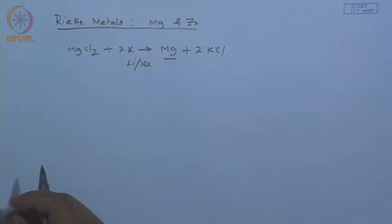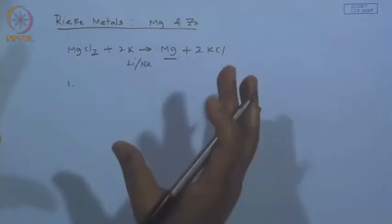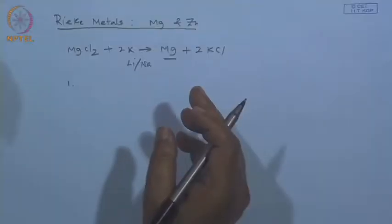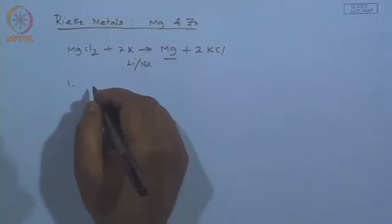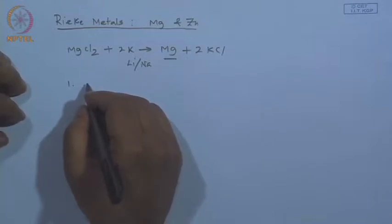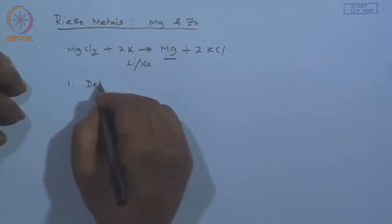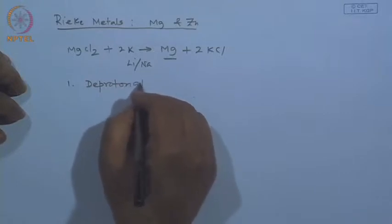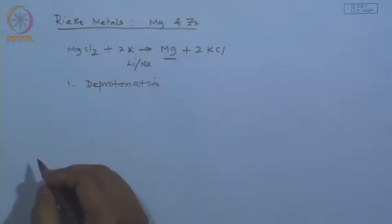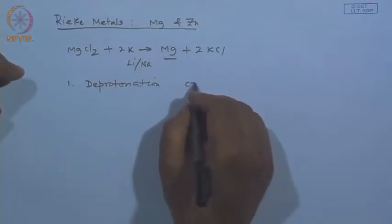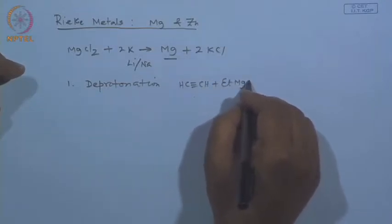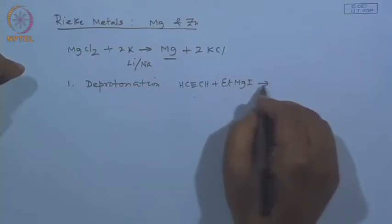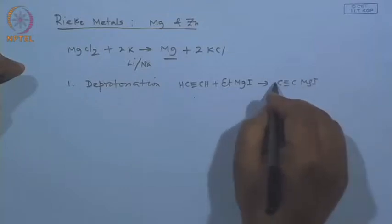This active magnesium is used for the preparation of organomagnesium compounds. All of us know the typical organometallic preparation fundamentally requires three different methods. The first one is deprotonation — that means you remove a proton — by which one can produce an organomagnesium. For example, if you have acetylene and react with ethyl magnesium iodide, you know the product is again a new organomagnesium compound.